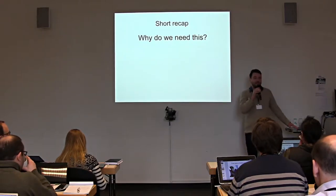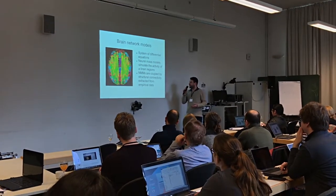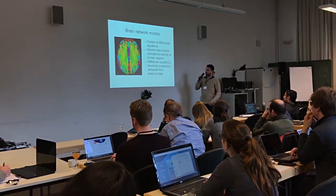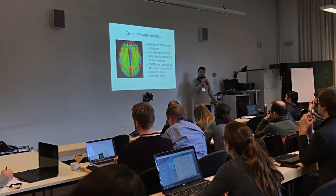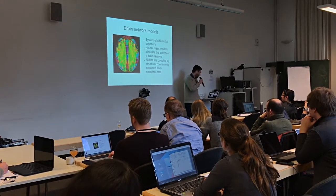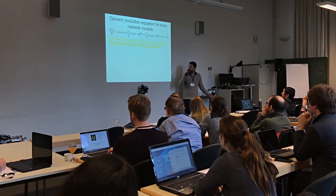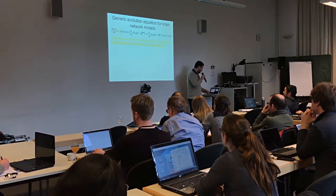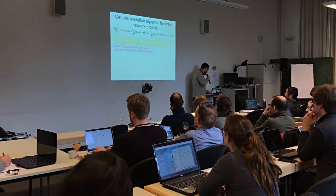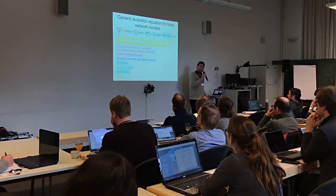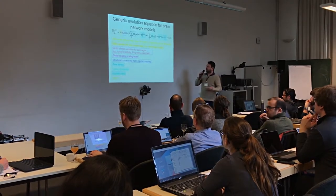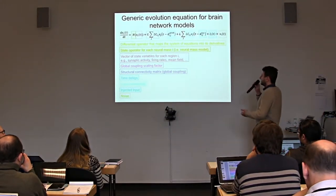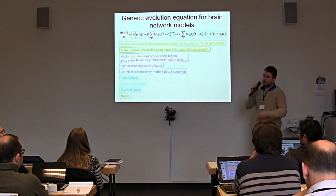Why do we need personalized brain models — where does subject specificity come in? It's a dynamical system using differential equations. We have a generic differential equation where the left-hand side is the differential operator mapping the state to its derivative. The right-hand side is the neural mass model, and we add global connectivity from the structural connectome, weighting activity by structural connection strength and applying a global coupling scaling factor.